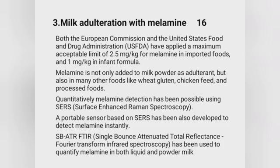Milk adulteration with melamine — both the European Commission and the US FDA have applied a maximum limit of 2.5 mg/kg for melamine in imported foods and 1 mg/kg in infant formula. Melamine is added not only to milk powder but also to wheat gluten, chicken feed, and processed foods. Quantitative detection has been possible using SERS (surface-enhanced Raman spectroscopy); a portable SERS-based sensor has also been developed. SBATR-FTIR (single-bounce attenuated total reflectance Fourier transform infrared spectroscopy) has been used to quantify melamine in both liquid and powdered milk.